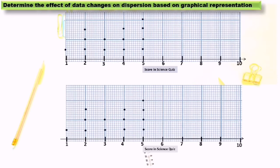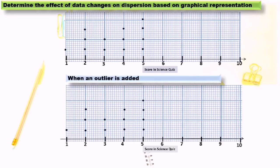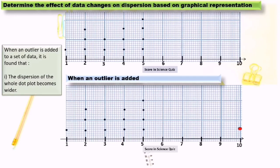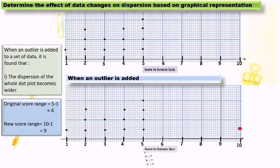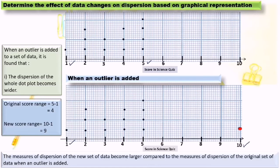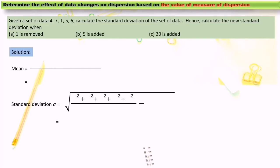Now we proceed to the next dot plot graph. This dot plot graph shows the score of students in a science quiz. When an outlier is added here — 10 — it is found that the dispersion of the whole dot plot becomes wider. Original score range is 5 minus 1 equals 4; new score range is 10 minus 1 equals 9. The measures of dispersion of the new data set become larger compared to the original when an outlier is added.